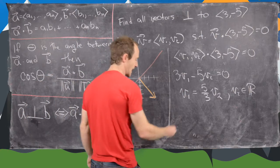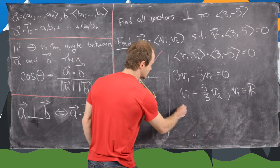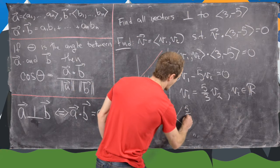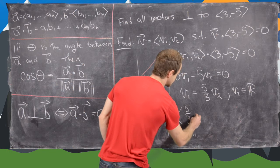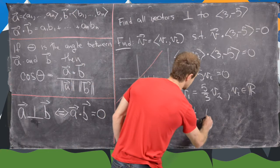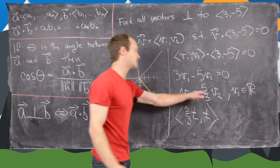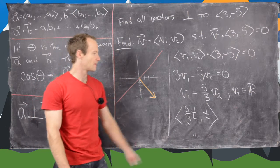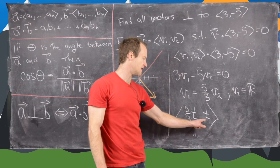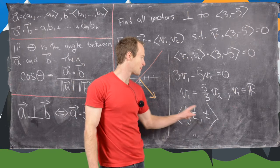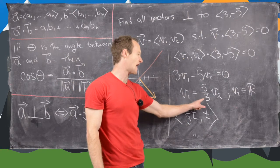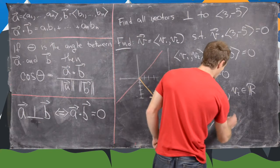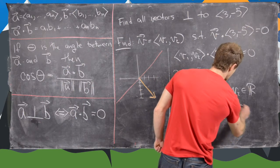It can be any real number, and that will still give us something that's orthogonal to 3, -5. So maybe we could write this as follows: we need a vector that is 5 over 3 times t, comma t. So here I've just set t equal to v2, so we have some sort of parameter. So notice if v2 equals t, that means the second component is t. But then the first component is 5 thirds times the second component.